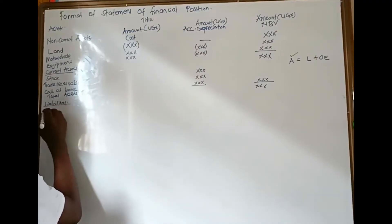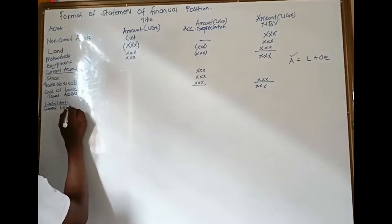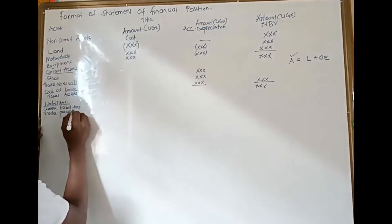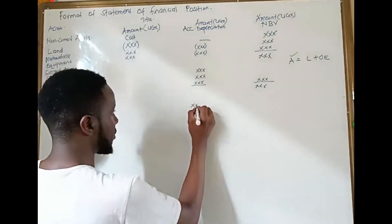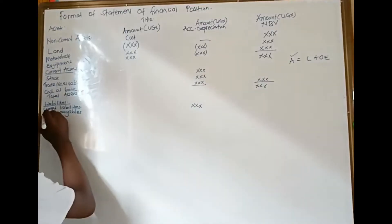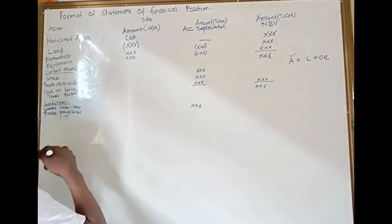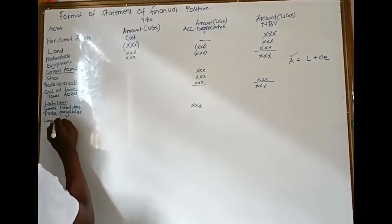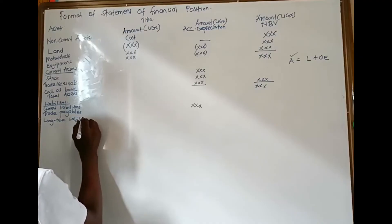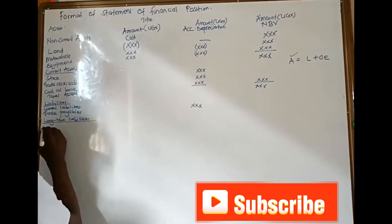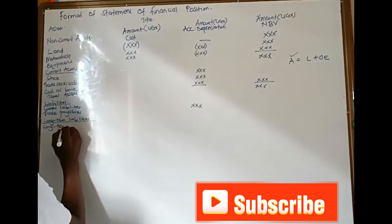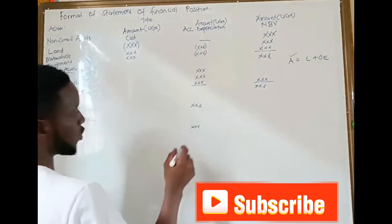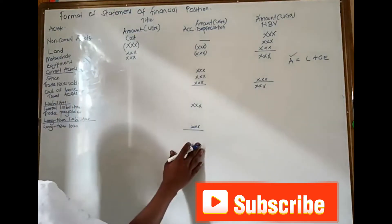On the liabilities side, we have current liabilities — for example, trade payables or creditors. We bring them in and list them. Then we have long-term liabilities — for example, a long-term loan. We bring that in. We then get a total of all liabilities and bring them here.